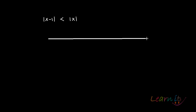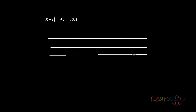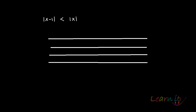Let me give certain values to x, then figure out the value of x minus 1, and then the absolute values. So here is my x — let's find x minus 1, then absolute value of x, and absolute value of x minus 1. We'll consider from minus infinity, through 0, through 1, and out to positive infinity.